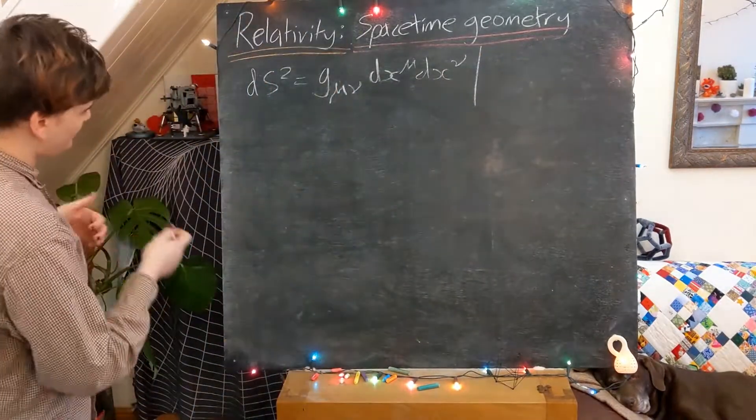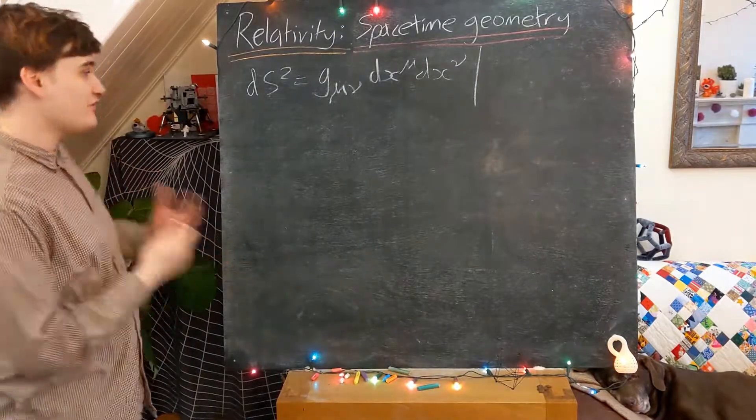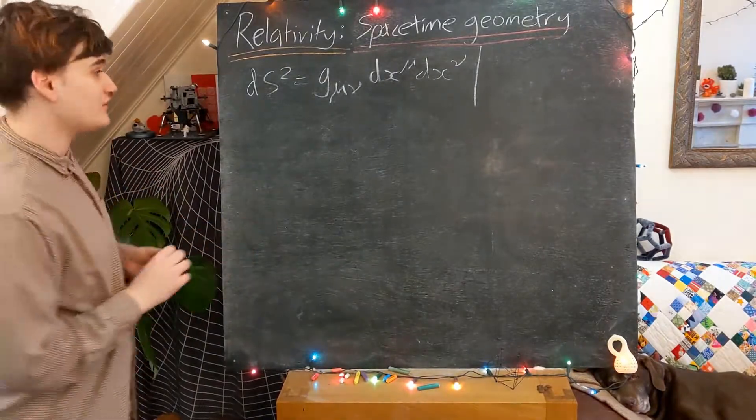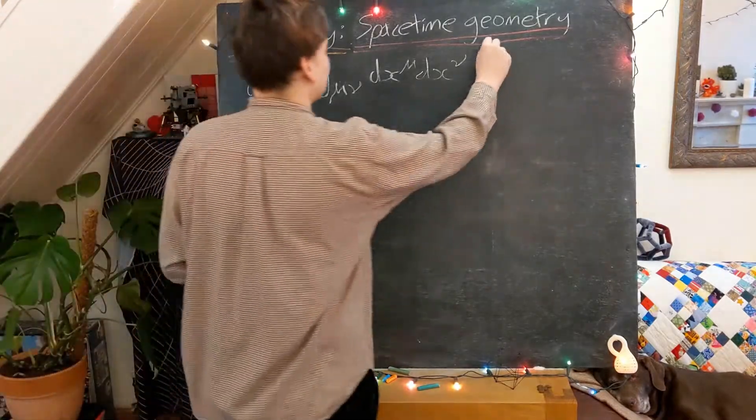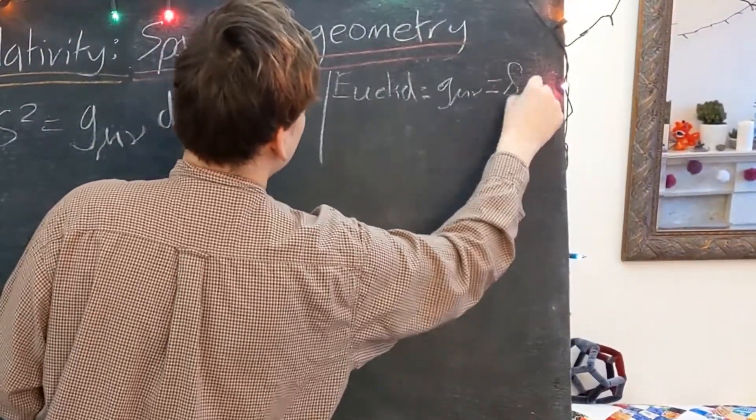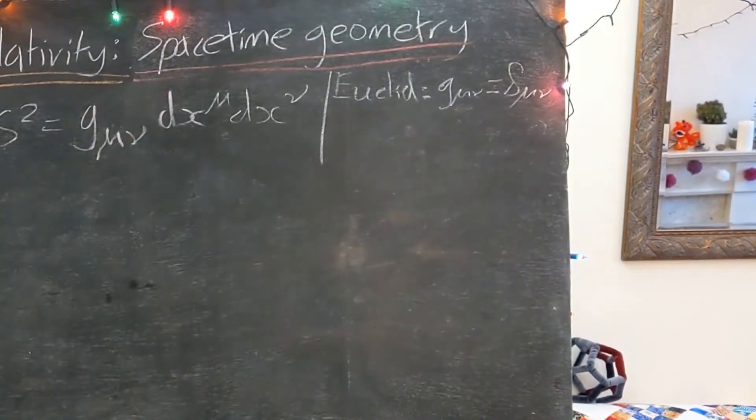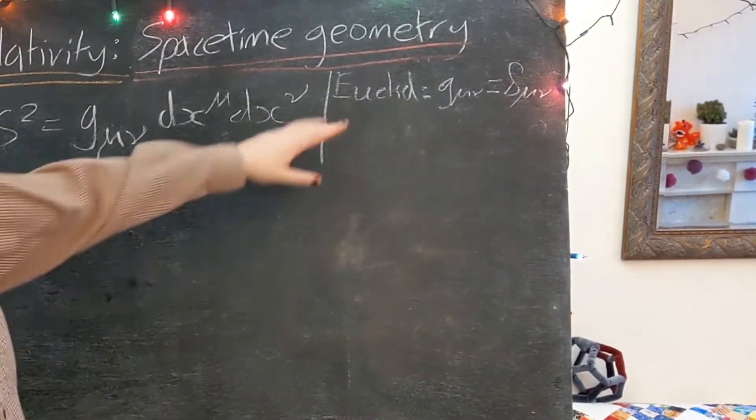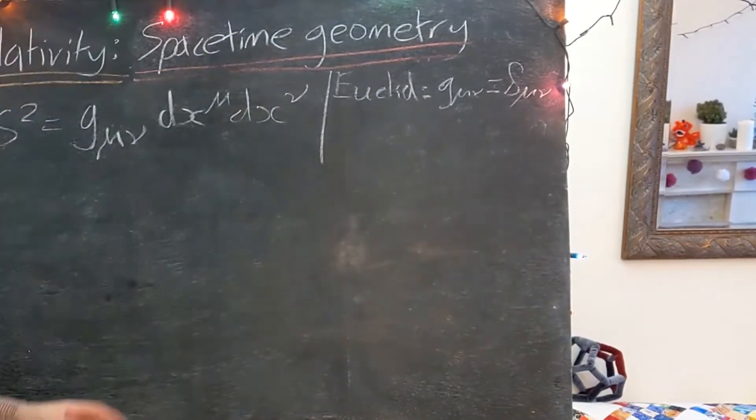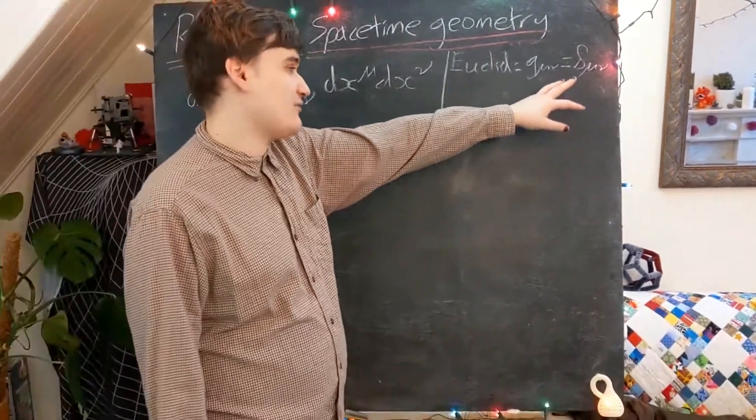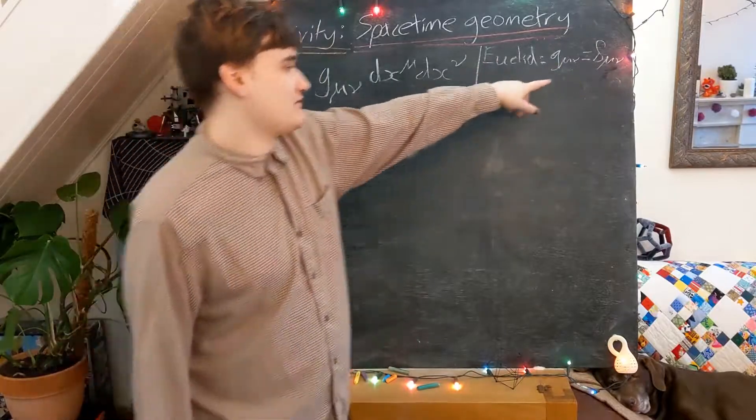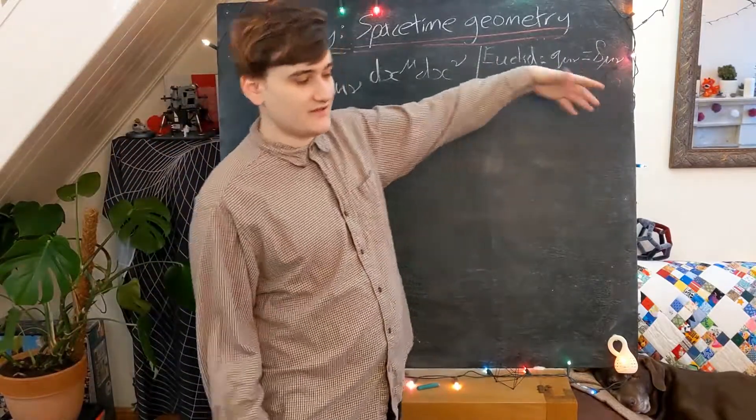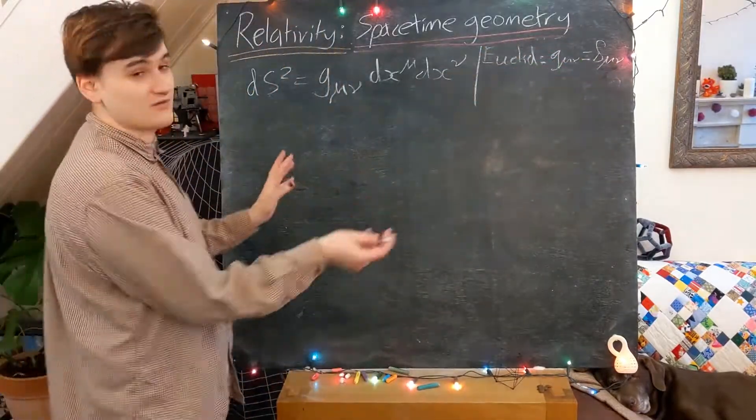As we saw, the metrics for Euclidean and Minkowski space are fairly simple. For Euclidean space it's simply just the identity matrix, and we usually like to express the identity matrix essentially using this Kronecker Delta matrix, which is basically defined as being whenever these two indices are equal, it's 1, so the 0,0, 1,1, etc. components of 1, and all the other components of 0.